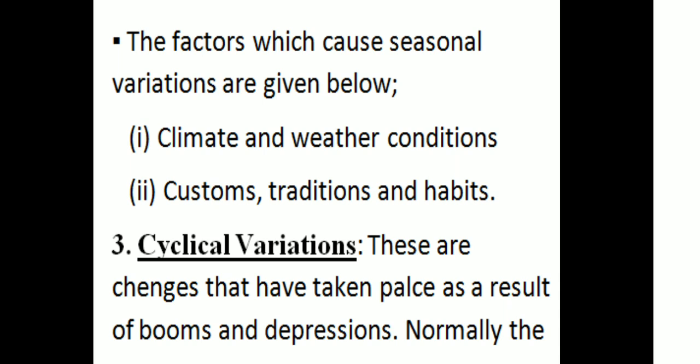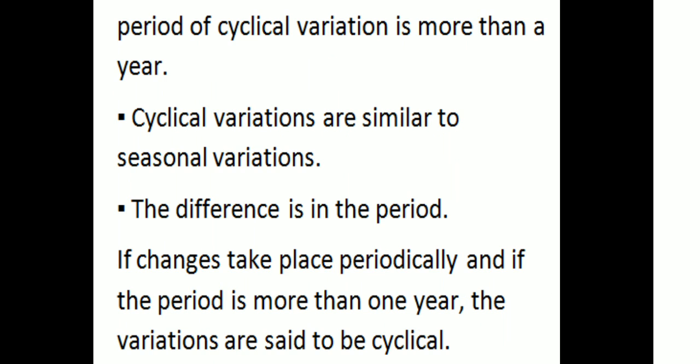Third one: cyclical variation. These are changes that have taken place as a result of booms and depressions. Normally, the period of cyclical variation is more than a year. Cyclical variations are similar to seasonal variation; the difference is in the period. If changes take place periodically and the period is more than one year, the variations are said to be cyclical.